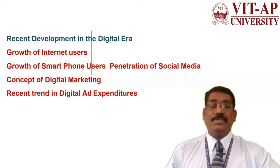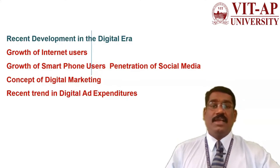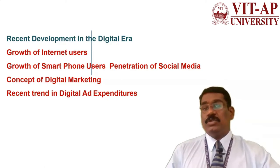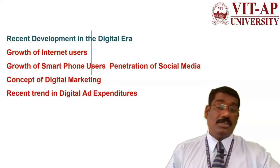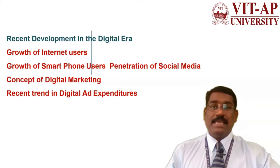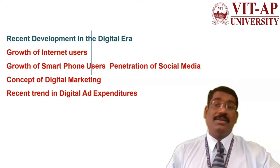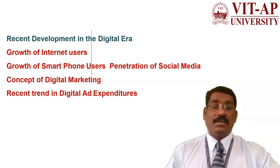The digital transformation in India started with the campaign known as Digital India. It was launched by the government of India to ensure the country and its citizens are technologically empowered with high-speed internet and the availability of government services online. The campaign consists of three components: the development of secure and stable digital infrastructure, delivering government services digitally, and building universal digital literacy.